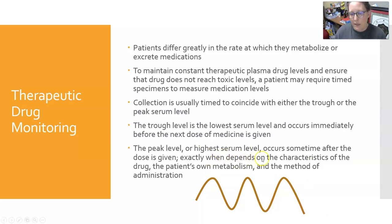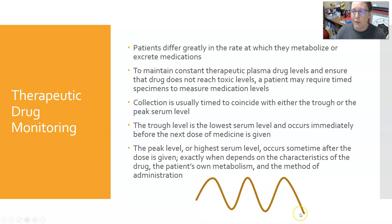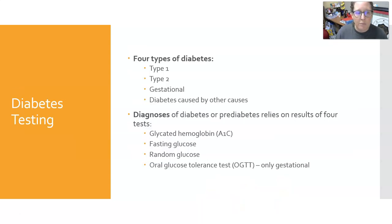When exactly the peak occurs depends on the medication, the patient's metabolism, and the method of administration. Peak levels are high, trough levels are low. With repeated doses the patient goes peak, trough, peak, trough. They may not check every dose — some antibiotics are checked every third infusion — because reaching toxicity levels can be damaging to the liver, kidneys, eyesight, or hearing.